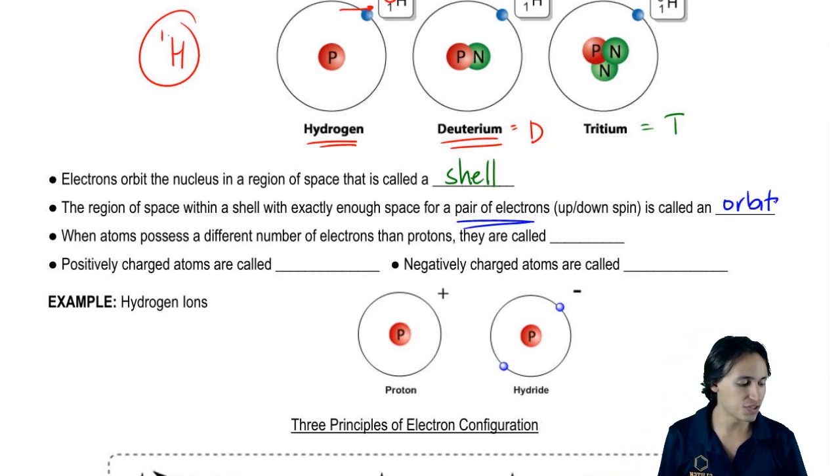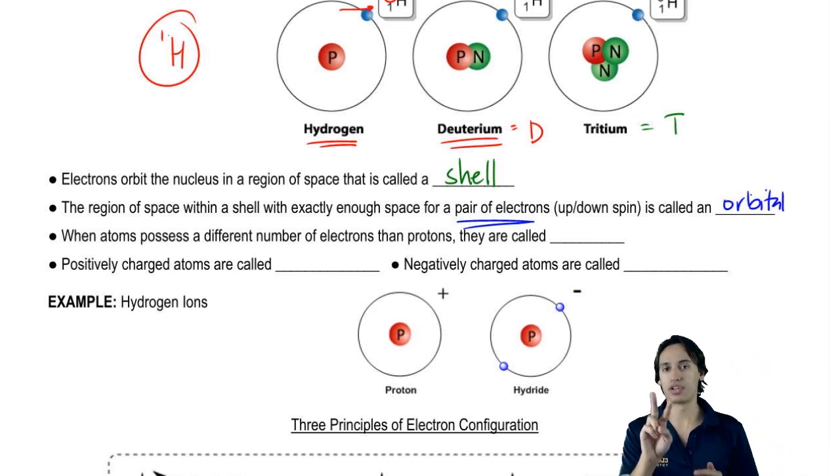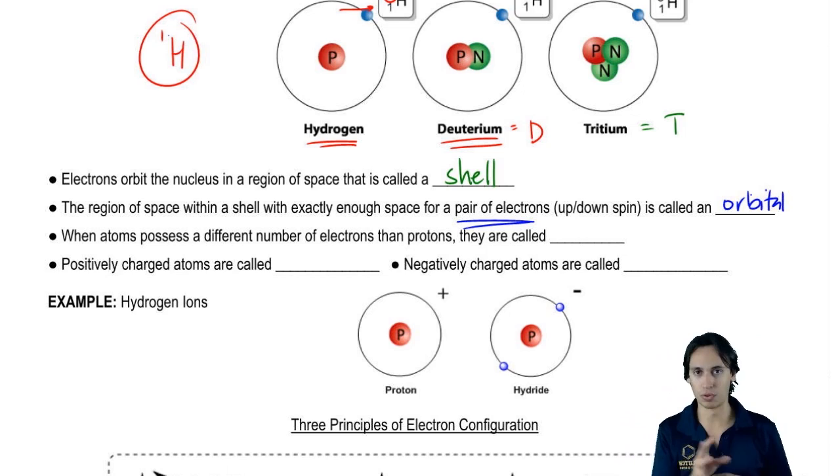An orbital is that region of space that only two electrons, an upspin and a downspin, can exist in. We're going to talk a lot about orbitals later.